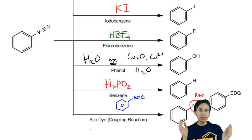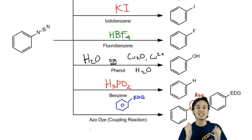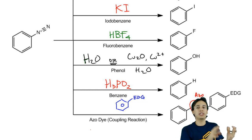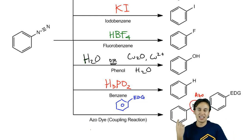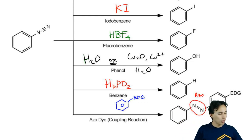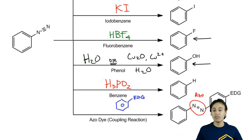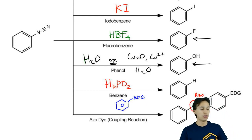We won't worry about the mechanisms for these reactions — this is more of a global overview. The most important part is that you memorize these reagents and know how to use them in synthesis, because a huge part of this area combines both EAS and diazo reactions together. Keep in mind that diazo is the only way to make fluorobenzene and one of the only ways to make phenol, and it's the only way to make an azo dye.